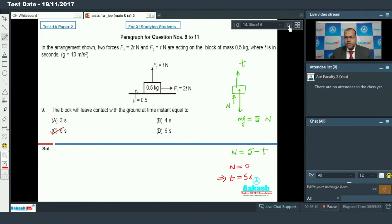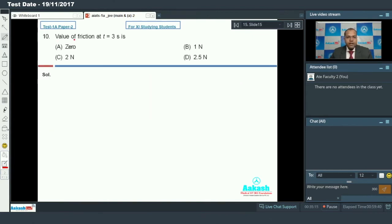Let's move to the next part of this paragraph. In question number 10, it is asked: value of friction at T equal to 3 seconds.